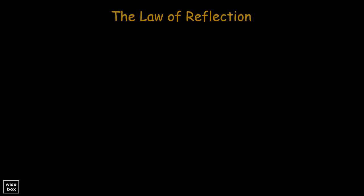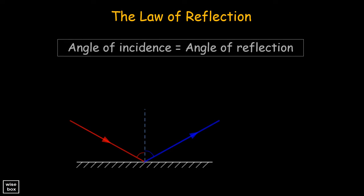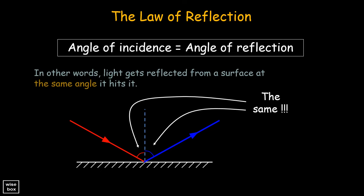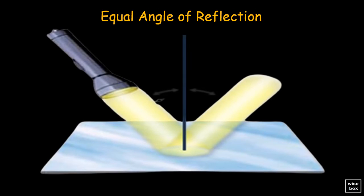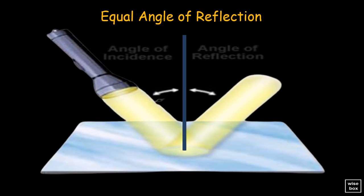Light always reflects according to the law of reflection. The law of reflection states that the angle of incidence equals the angle of reflection. In other words, light gets reflected from a surface at the same angle it hits it. This illustration shows that the light from an ordinary flashlight follows the law of reflection when its light hits a reflective surface like a mirror.